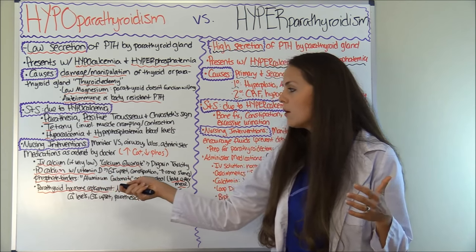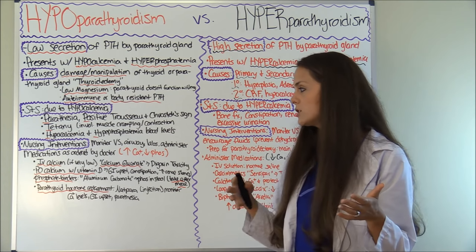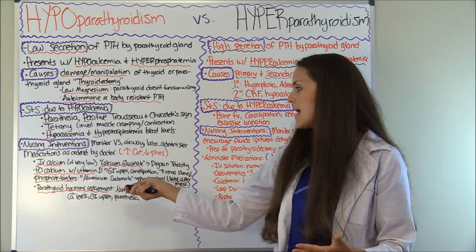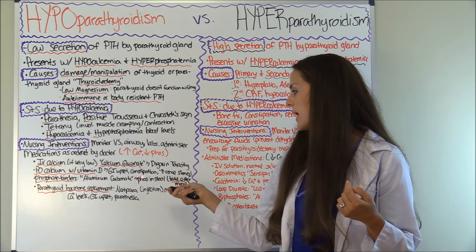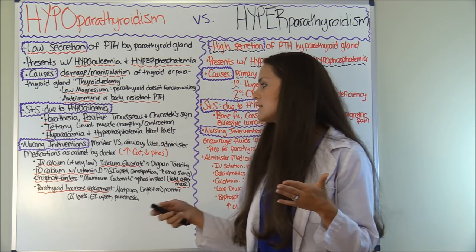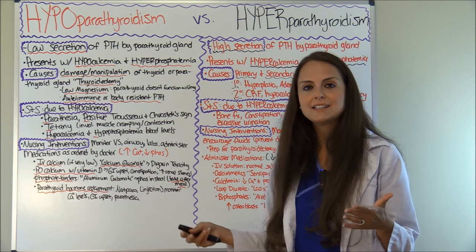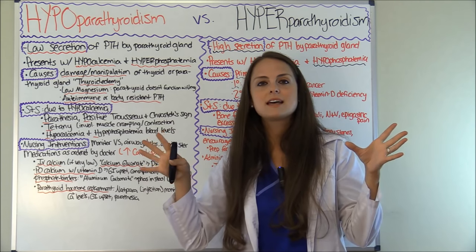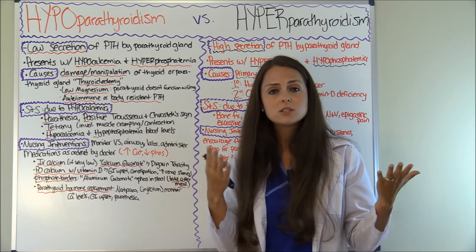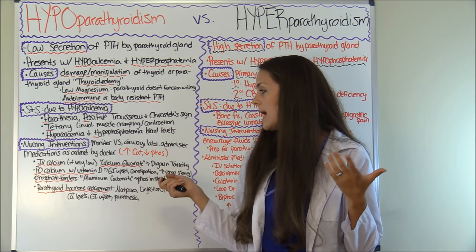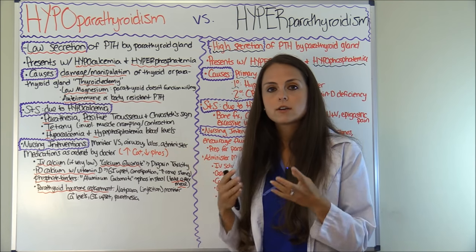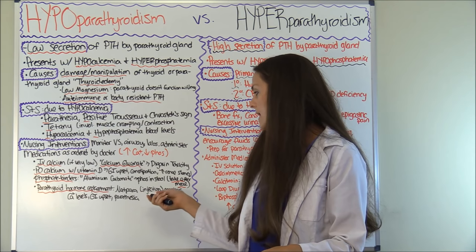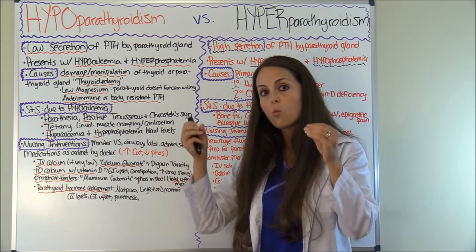Another treatment is oral calcium medications with vitamin D — because vitamin D helps absorb calcium. Side effects can include GI upset, constipation, and increased chances of renal stones. Another medication is phosphate binders, because in this condition we have hyperphosphatemia. One drug is aluminum carbonate — it binds the phosphate from the food you eat and moves it into the stool for excretion. You would want to administer this medication with food.